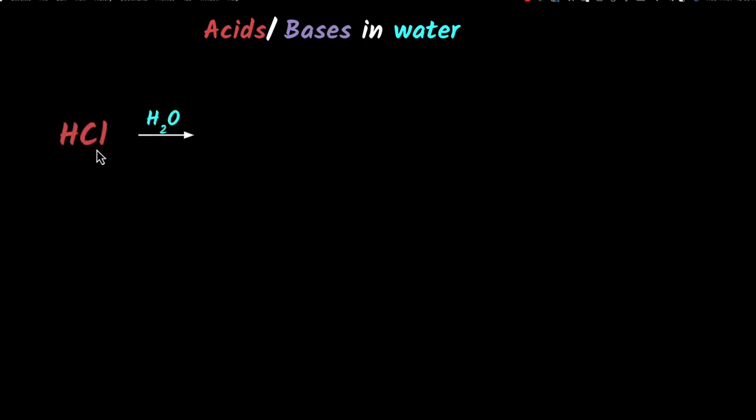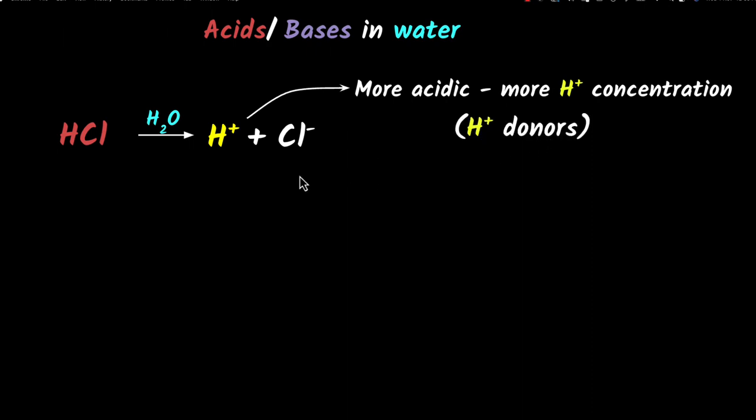What happens if you put hydrochloric acid in water? Hydrochloric acid will dissociate to give you H+ ions and Cl- ions. Because there are now more H+ ions in the solution, it has become more acidic due to the increased H+ concentration. This is why we say acids are H+ donors - when they dissociate, they give you H+ ions.